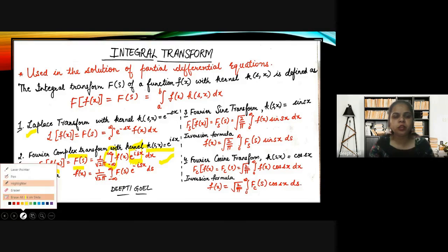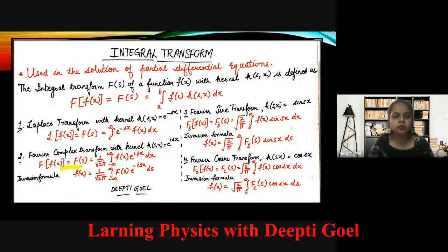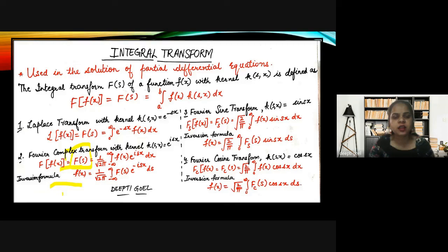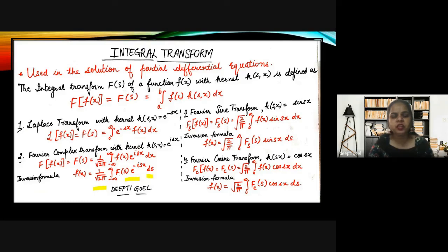Since we have the formula for the Fourier complex transform, we can calculate its inversion formula. The inversion formula means we apply integration over f(s) to recover the function itself. The inversion formula is f(x) equal to 1 over root 2π, integration over f(s) e to the power minus iota sx ds. The kernel in the inversion formula is e to the power minus iota sx, limits are minus infinity to plus infinity, and the same constant 1 over root 2π appears in both.